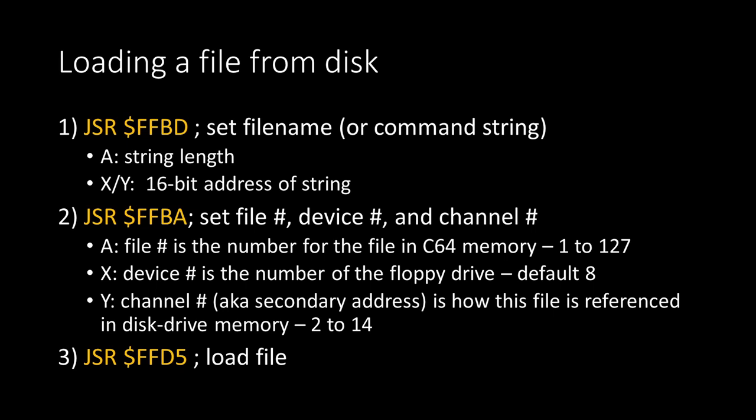I'm going to give a high-level perspective of the disk drive IO calls. Here's the crash course on CBM DOS calls — the loader code is going to contain many kernel calls. Here's an example of loading a file from a disk: a routine called sets the file name, with the accumulator being the length and X and Y holding the 16-bit address of the string. In Commodore land, you set a file number, device number, and channel number — the file number is on the Commodore 64 side, the channel number is on the floppy drive side.